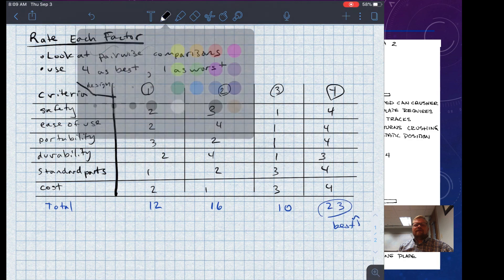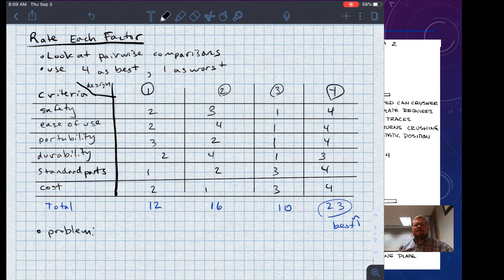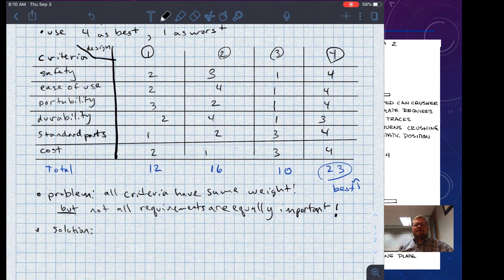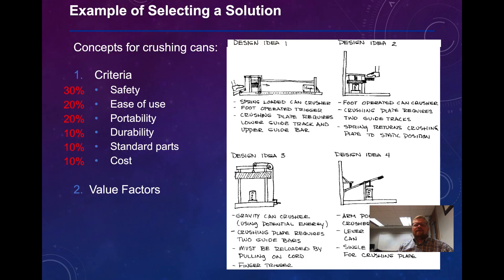There is, however, one problem with this. The problem is that all of these criteria have the exact same weight. Why is that a problem? Well, not all of the requirements are equally important. I would argue that some are more important. So what we may do then is add value factors and use weighted decision-making.